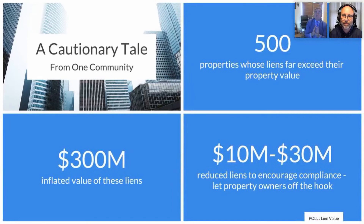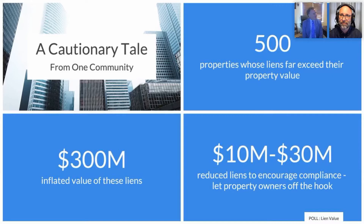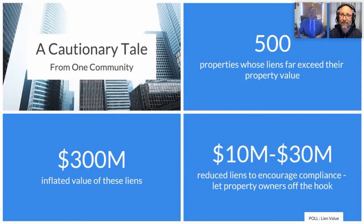I wanted to share a dramatic cautionary tale of the consequences of passive code enforcement. A Google alert popped up — an agenda item from a municipality reporting they had $300 million worth of liens owed to their taxpayers. I had to go back and look — yes, $300 million. Digging deeper, the problem was even greater: that $300 million only counted liens where the lien exceeded the value of the property. It didn't count the $5,000 lien for mowing the grass or demolishing the property. The number is likely much, much greater.